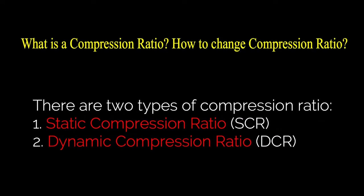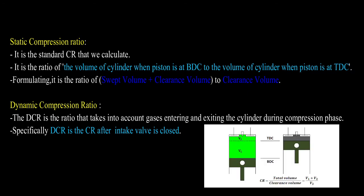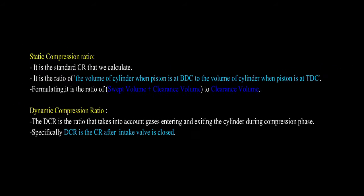There are two types of compression ratio: 1) static compression ratio and 2) dynamic compression ratio. Static compression ratio is the standard compression ratio — it is the ratio of total volume to clearance volume. Dynamic compression ratio takes into account gases entering and exiting the cylinder during compression phase. Specifically, DCR is the compression ratio after the intake valve is closed.